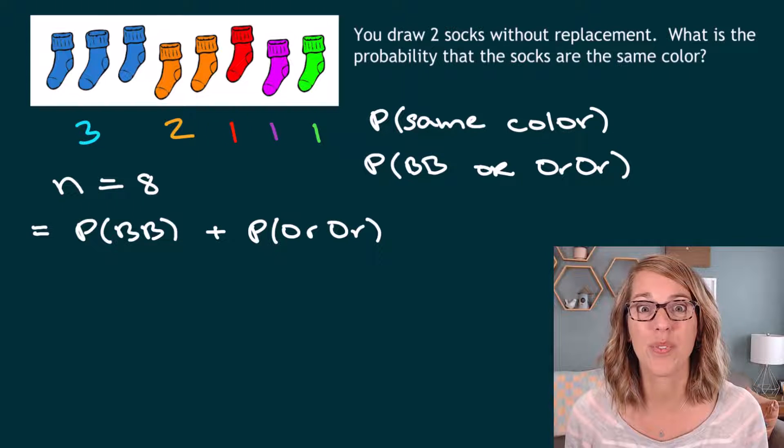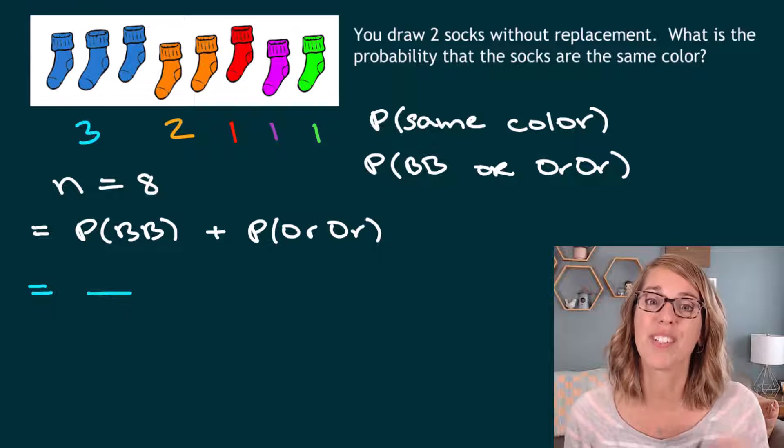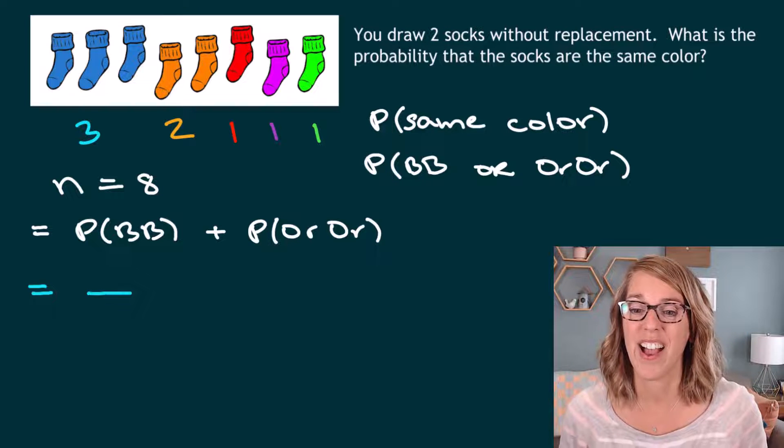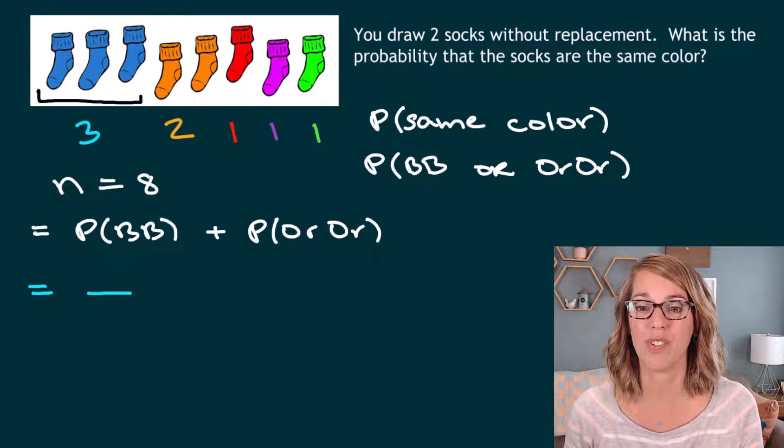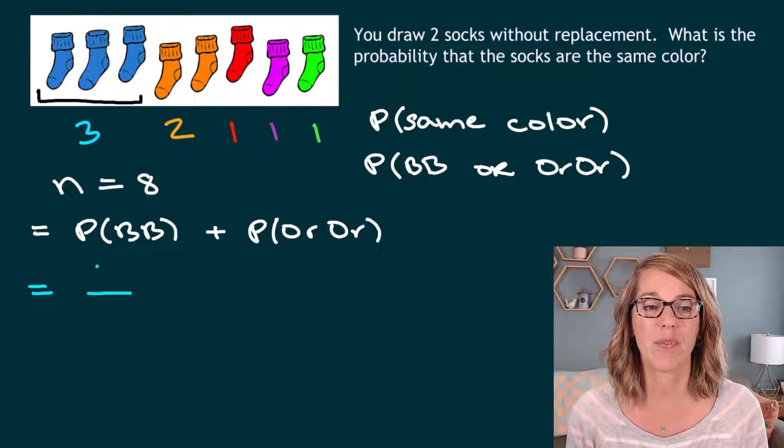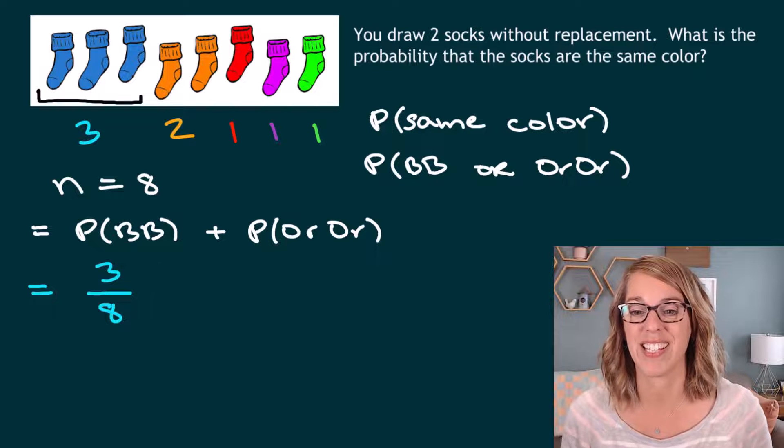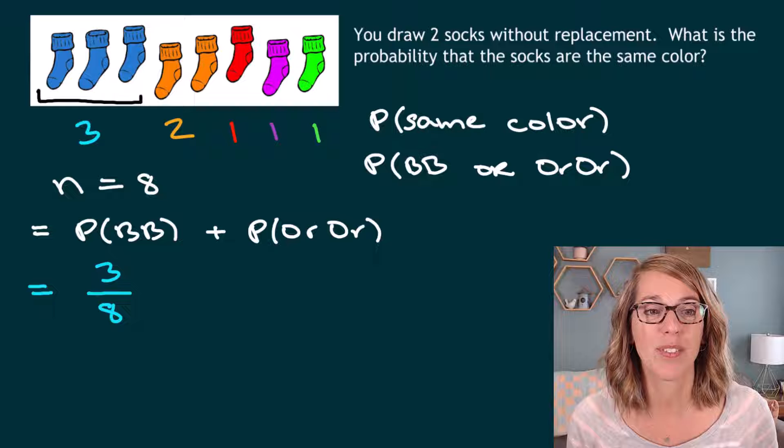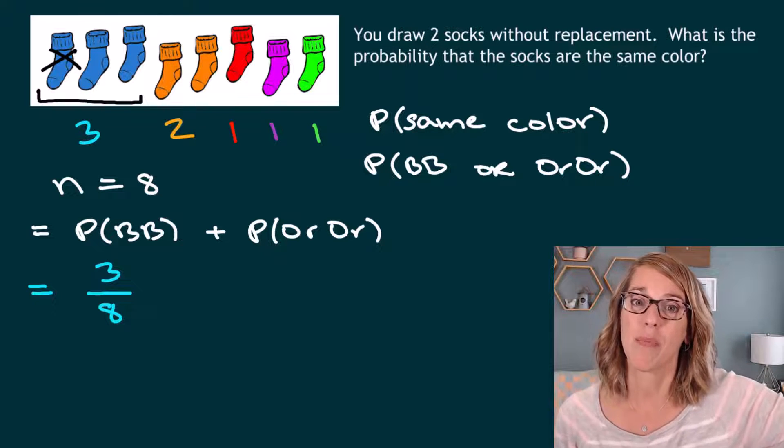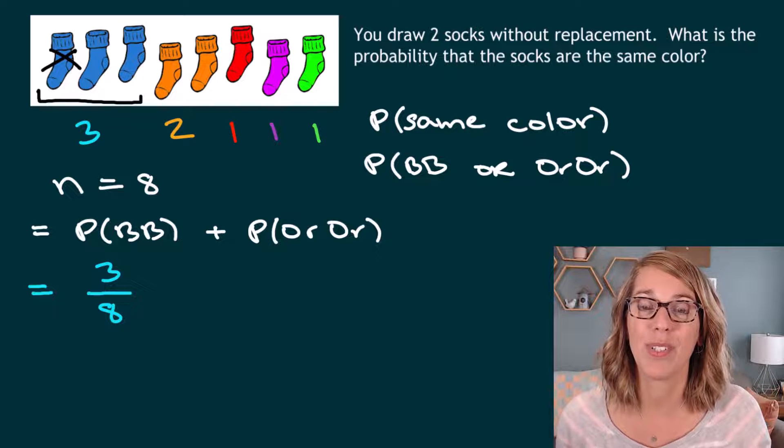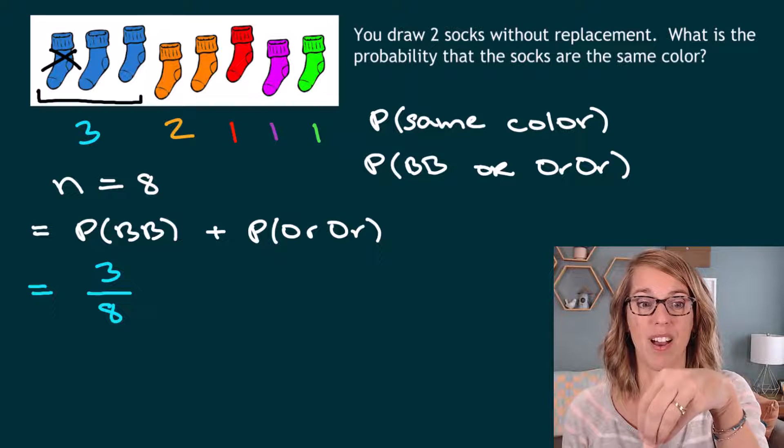We're going to do these two cases separate. Let's go ahead and start with the blue case first. I want the probability of drawing that first blue sock. I go back up and I look at my socks. There are three different blue socks that I have to choose from. So that gives me three favorable outcomes out of the total eight. But I'm going to take one of those blue socks. I'm going to draw it out and put it aside. Now I'm looking for the probability of blue and a blue. So now I'm going to go back in and I'm drawing for that second blue sock.